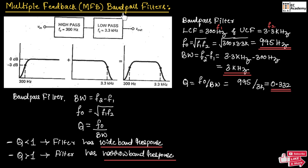To design a band pass filter with lower cutoff frequency 300 Hz and upper cutoff frequency 3.3 kHz: f1 = 300 Hz, f2 = 3.3 kHz, center frequency = 995 Hz, bandwidth = 3 kHz, and quality factor = 0.332, which is less than 1. So the band pass filter will have a wide band response.